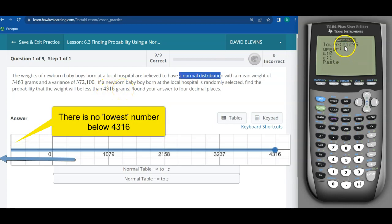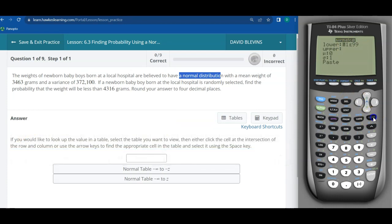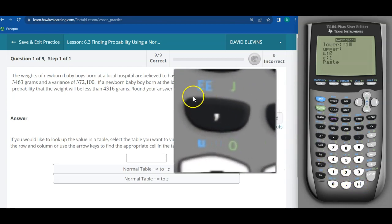So that means I'm going to let my lower number be some big negative number, negative one E99. Let me show you how to put that in if it's missing. You just type in negative one and then there's a double E on here.